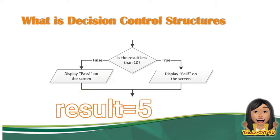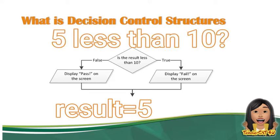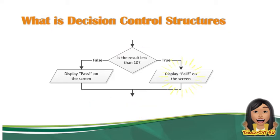For example, the value of result is 5. Is 5 less than 10? This is true. Therefore, it will display 'failed' on the screen. So a decision control structure is answerable by true or false, and it can only execute a certain statement or function if the given conditions are met.